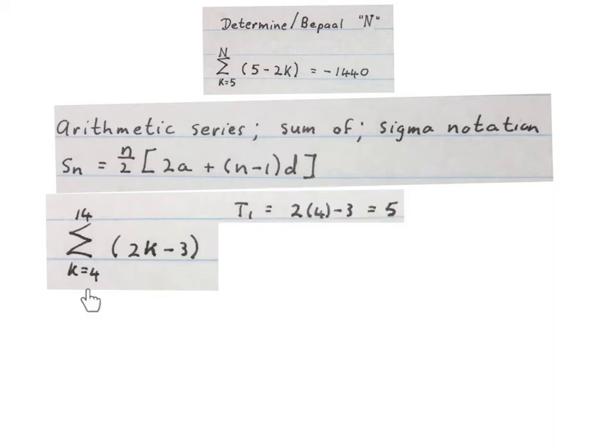To find term 1 we take that 4, plug it into the formula, work it out and get the answer. So term 1 is 5. We take the number above 4 which is 5, plug it in here. So 2 times 5 minus 3 gives us 7.